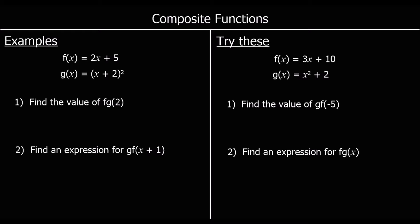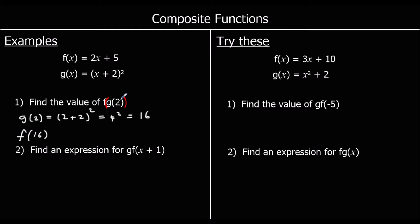Two more questions. We've got an f function and a g function. The first question: find the value of fg of 2 — putting 2 into g and then that into f. So g of 2 is 2 plus 2, which is 4, squared, which is 16. Now we put 16 into f: f of 16 is 2 times 16 plus 5, which is 32 plus 5, equals 37.